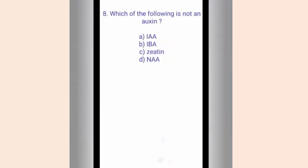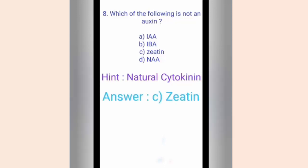Question eight. Which of the following is not an auxin? The options are A. IAA, B. IBA, C. Zeatin, D. NAA. The hint is natural cytokinin. The correct answer is option C, Zeatin, because zeatin is a natural cytokinin while the others — IAA, IBA, and NAA — are examples of auxin.